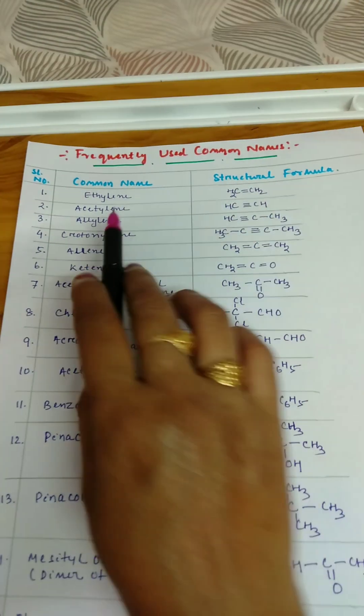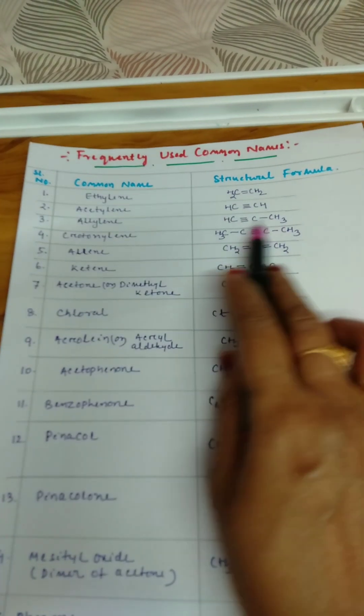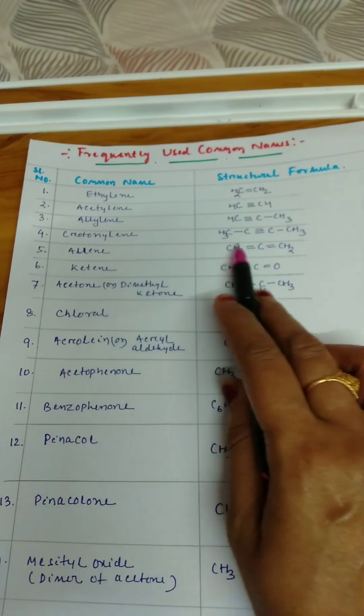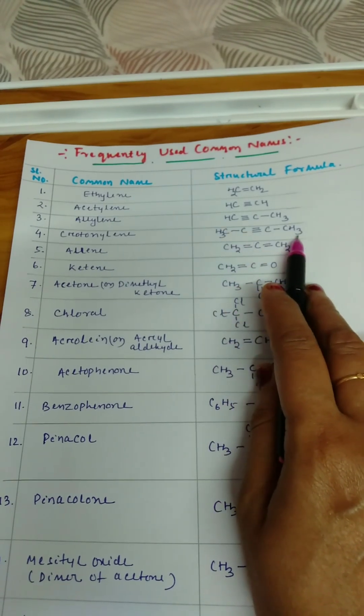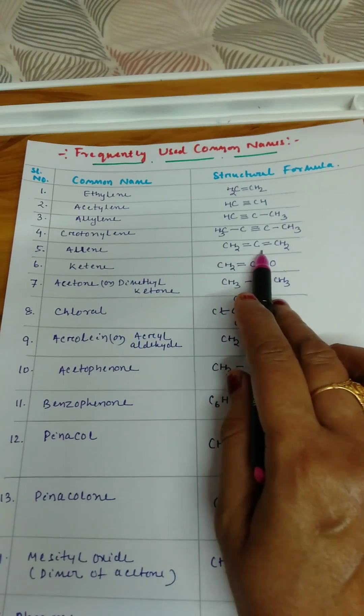Some frequently used common names: ethylene CH2=CH2, acetylene CH≡CH, allylene CH≡C-CH3, crotonic acid. This is your butyne, the common name is crotonic acid. Allylene CH2=C=CH2.